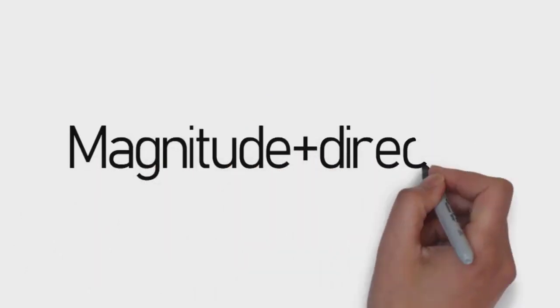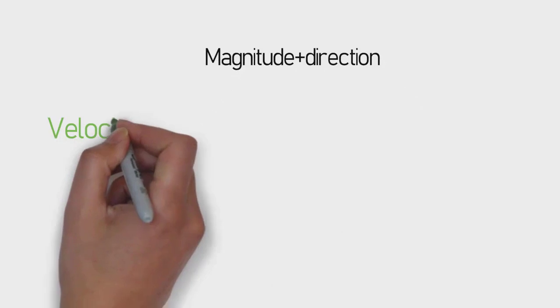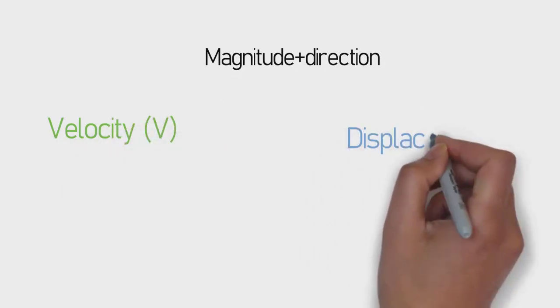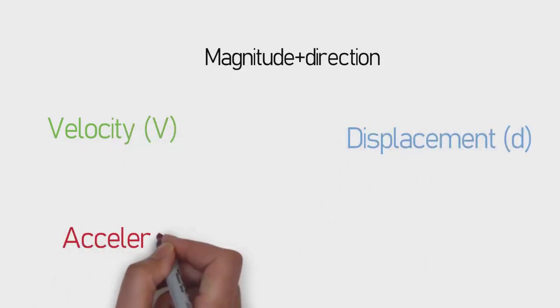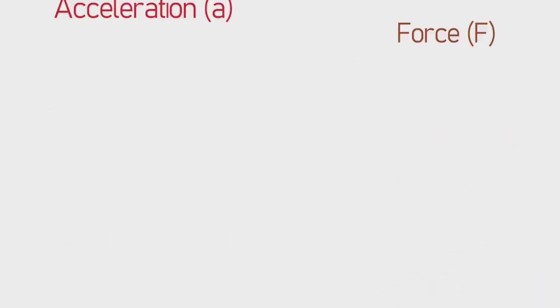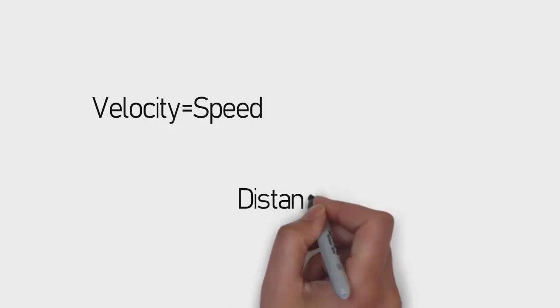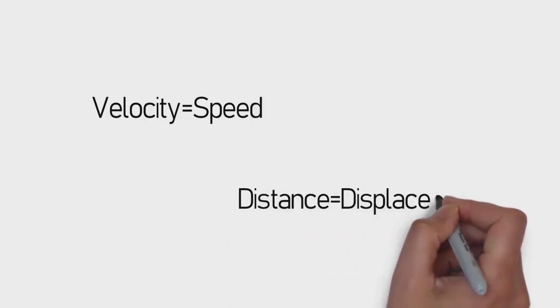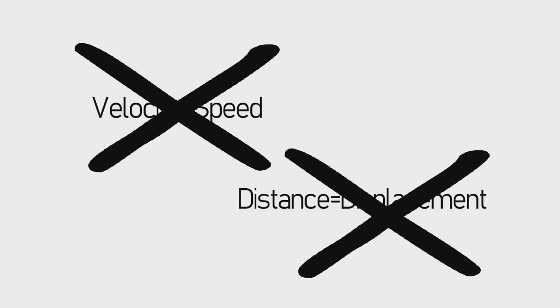But a vector has not only magnitude but also direction. Examples of vectors include velocity, displacement, acceleration, force, and so on. Maybe some of you thought that velocity and speed, or distance and displacement, were the same things — no, they are not.